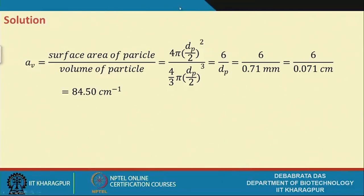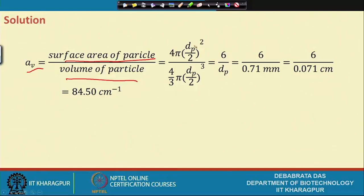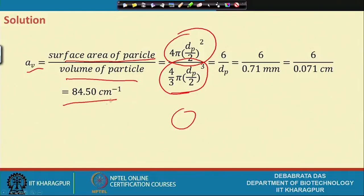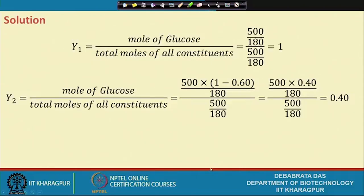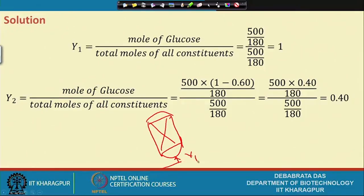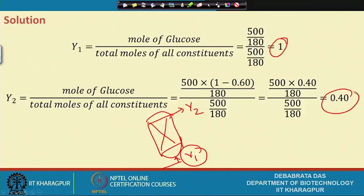A_B = surface area / volume of particle = 4πr² / (4/3·πr³) = 3/r ≈ 84.5 cm⁻¹. For mole fractions: at the inlet, all material is substrate (glucose), so Y₁ = 1. At the outlet, 60% is converted, meaning 40% substrate remains, so Y₂ = 0.4.